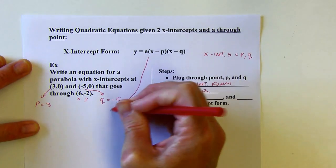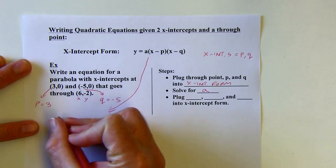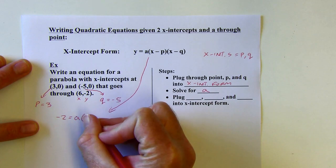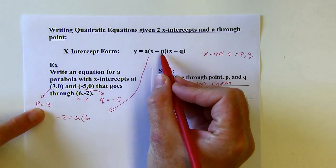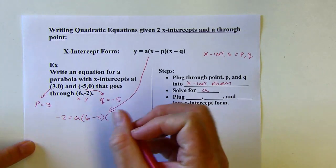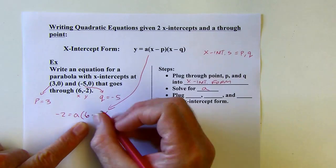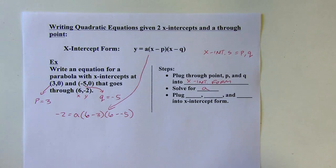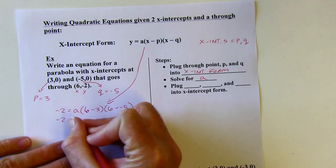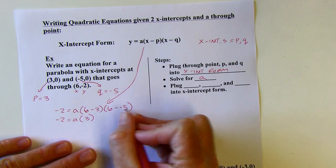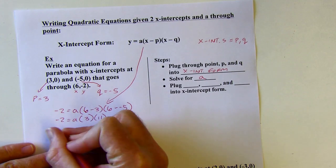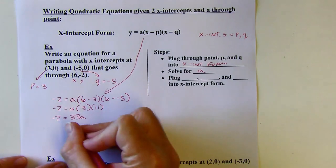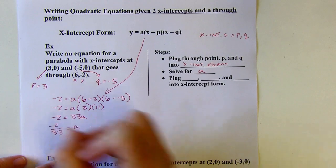I'm plugging in negative 2 for y and positive 6 for x in both x positions. Then x minus P — the P is 3 — and then x minus Q, which is subtracting negative 5. So 6 minus 3 is 3, and 6 plus 5 is 11. That gives me 33A when I do all that multiplication. I'll divide by 33, and I get negative 2 over 33 for my A value.